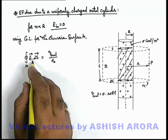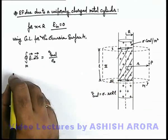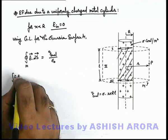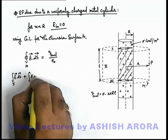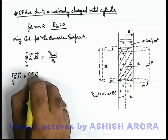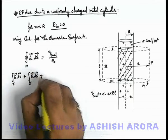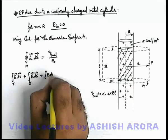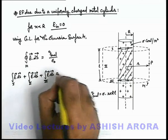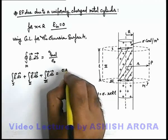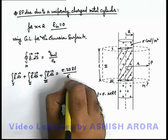The total integration can split in 3 parts: integration of E dot dS for section 1, plus integration of E dot dS for section 2, plus integration of E dot dS for section 3. It is equal to the enclosed charge sigma times 2πRl by epsilon not.